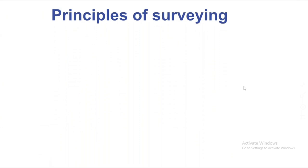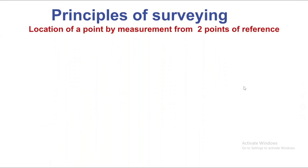The main topic is the principles of the survey. The first principle is location by measurement from two points of reference. At least two points of reference are needed to measure the location. Then we measure from the reference point.